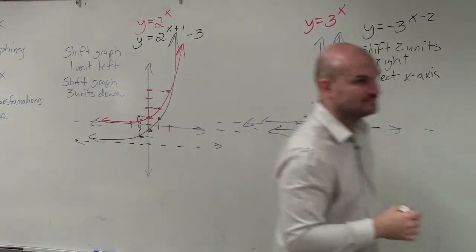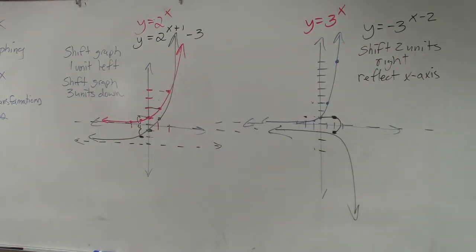So it looks something like this. All you're basically doing is taking all those points, shifting them two units to the right, and then reflecting them over the x-axis.